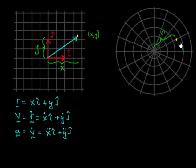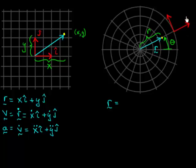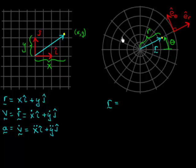Just like before, I can represent this point as a vector r. Instead of using basis vectors i and j, I want to use basis vectors appropriate for the polar coordinate system. I'll define one basis vector radially outward, called e-hat-r, and another perpendicular to that, called e-hat-theta. e-hat-theta is defined to be perpendicular to r and in the direction of increasing theta — so as theta gets bigger, e-hat-theta points in that same direction.